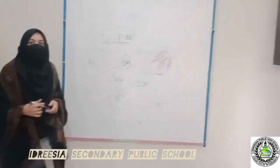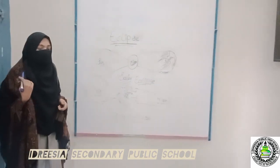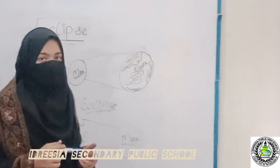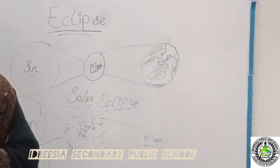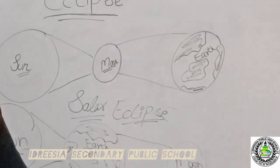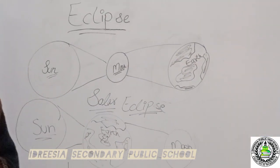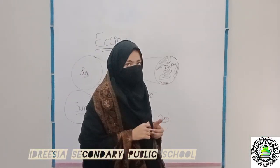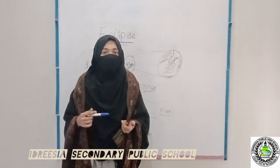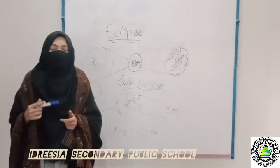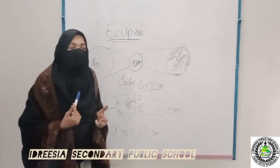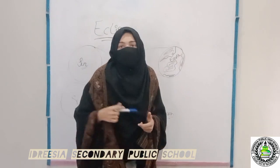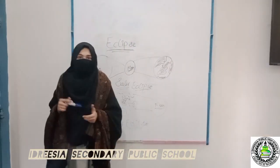What is Eclipse? How does Eclipse occur? When the sun, moon, and planets come in straight lines, there occurs an Eclipse. When an object comes between them, it blocks the sun rays, which causes an Eclipse.